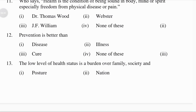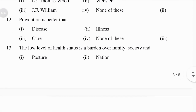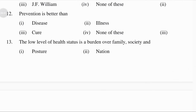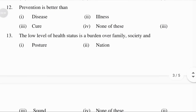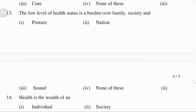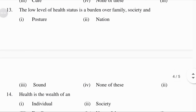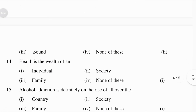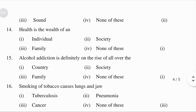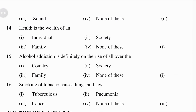The low level of health status is a burden over family, society and: posture, nation, sound, or none of these — answer: nation. Health is the belt of an individual, society, family, or none of these — answer: individual. Alcohol addiction is definitely on the rise all over the country, society, family, or none of these — answer: none of these.